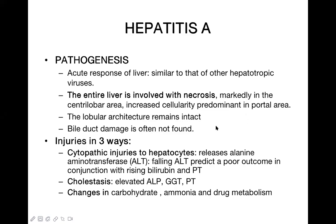The injury occurs in three ways: cytopathic injury to hepatocytes being the first. Important enzymes inside hepatocytes are ALT and AST. ALT is more important than AST in viral hepatitis. In the beginning, ALT is rapidly released so it is very high in the blood, and AST is also elevated.